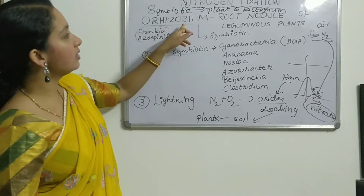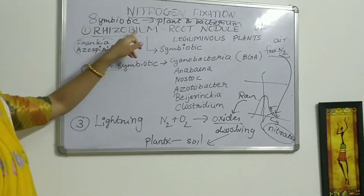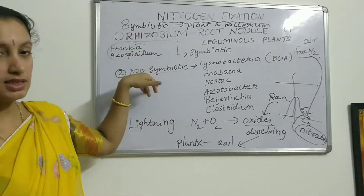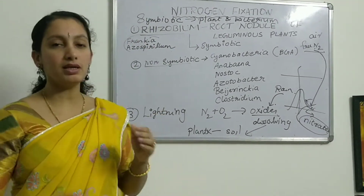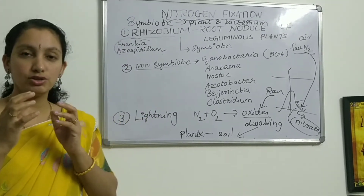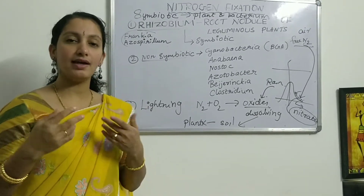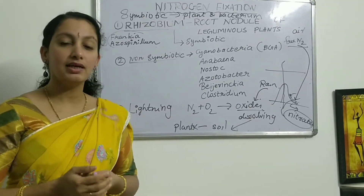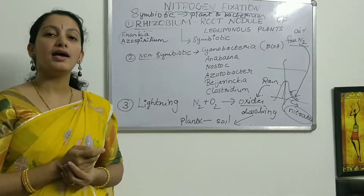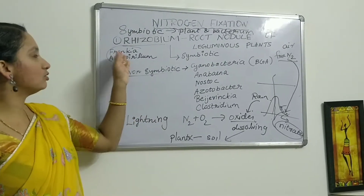We discussed how the symbiotic association is maintained by Rhizobium, Frankia, and Azospirillum — these three bacteria live inside the root nodule of leguminous plants, fixing nitrogen and making it available to the plant. In return, the plant supplies food to these bacteria.